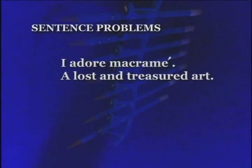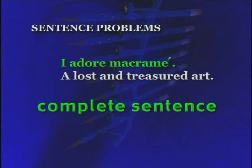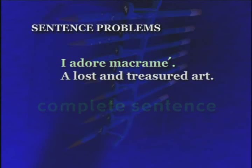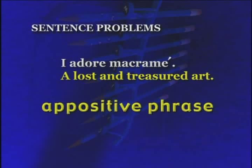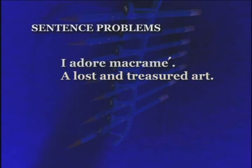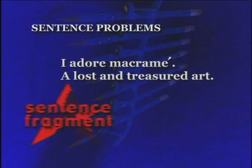Now, usually this happens when we stick a period where a comma should go. Let's take a look at one of these. "I adore macramé. A lost and treasured art." Do you see it? The first sentence is fine, but the second one — let's take a closer look. "A lost and treasured art" is an appositive for macramé. A phrase cannot stand on its own as a sentence, so we have a dreaded sentence fragment.